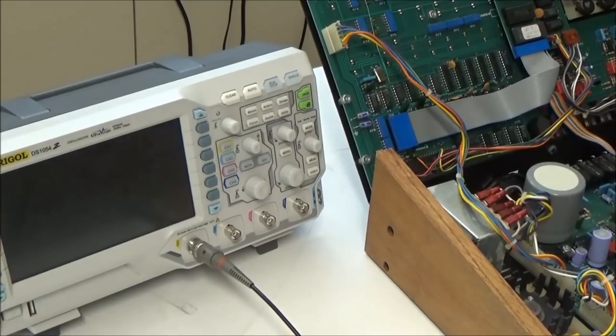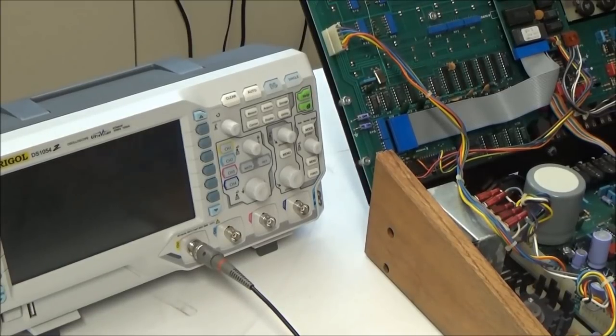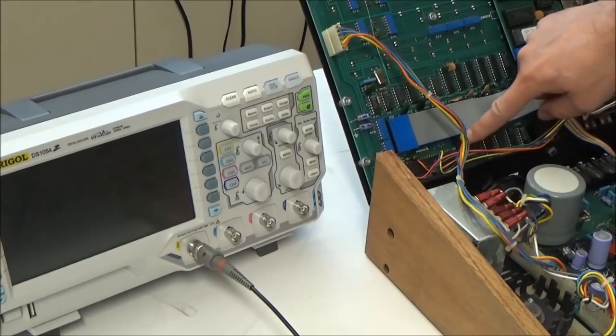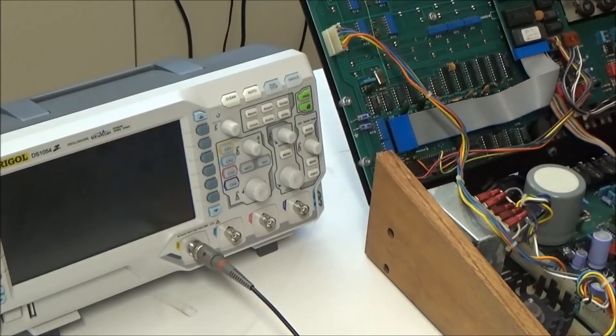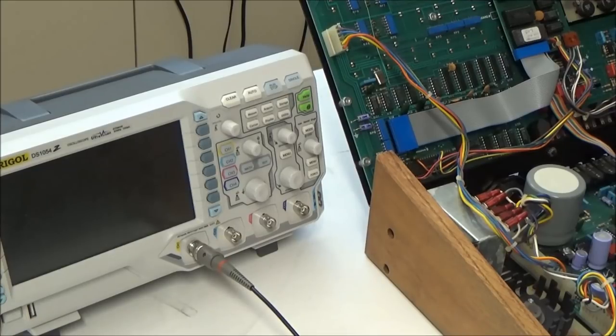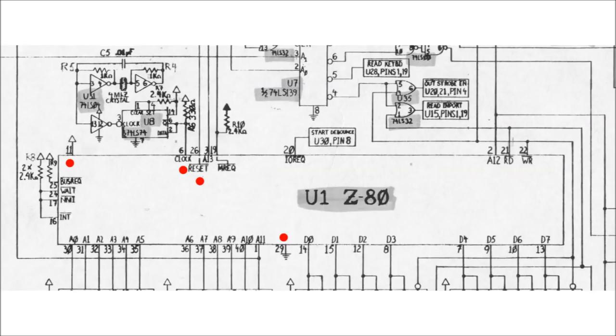So with the connector seemingly okay and the power rails all present and accounted for, the next thing I'm going to look at is the CPU chip, which is located right down here. I want to see if the CPU has power and is alive and running.